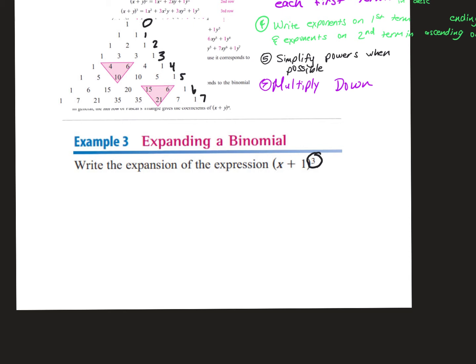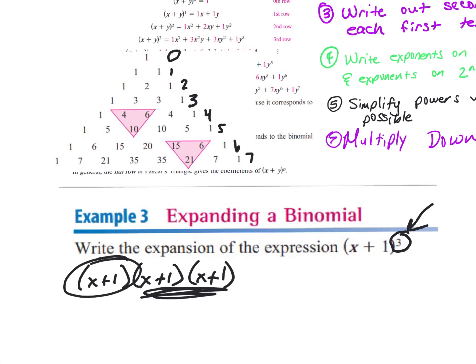When it says to write the expansion of x plus 1 to the third power, that just means x plus 1 times x plus 1 times x plus 1. You could FOIL and combine like terms, but when you expand to the fifth or sixth power you use Pascal's triangle because it's just a pattern. The exponent determines the row — for the third power, the coefficients of row three are 1, 3, 3, 1.